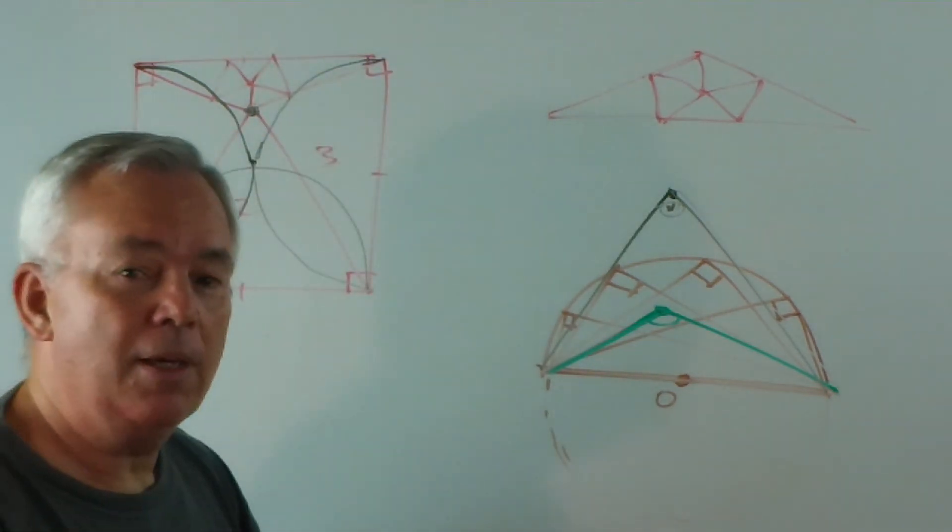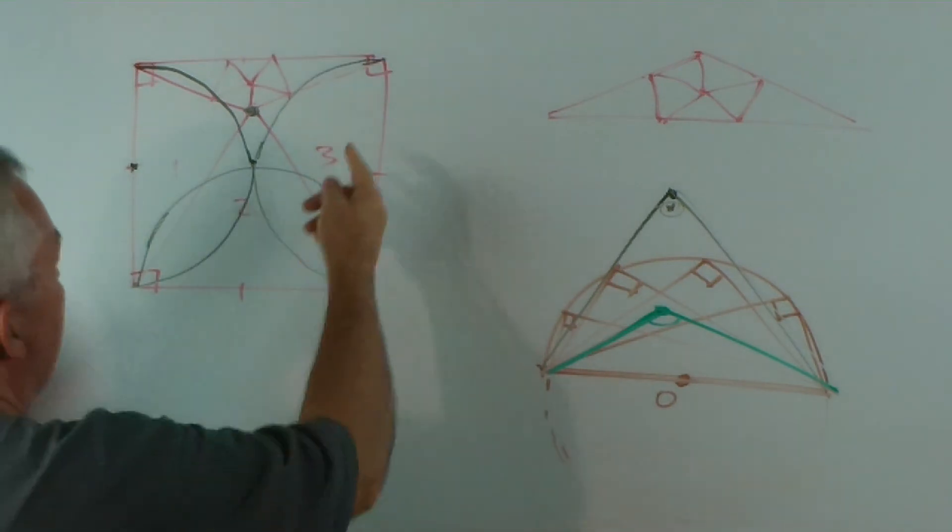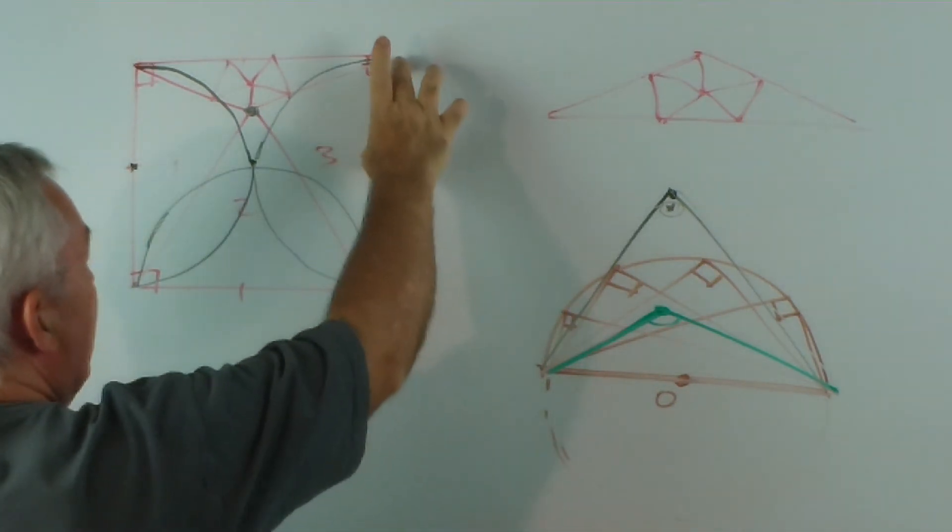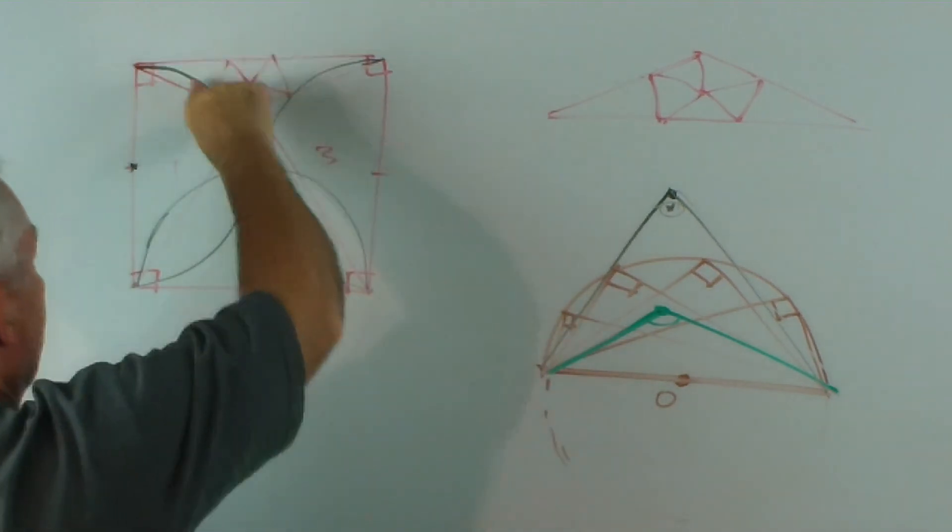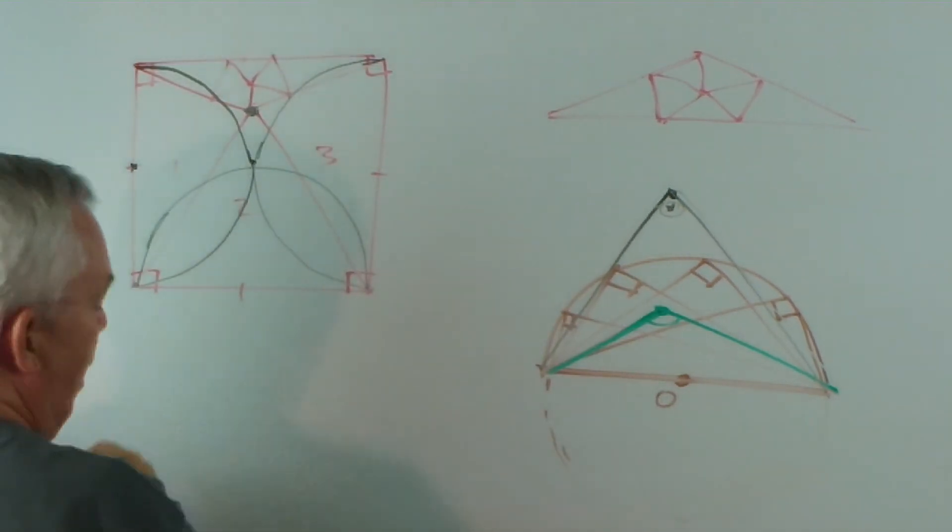So the construction to find the location of that point is to do just this: with a pair of compasses, to draw two semicircular arcs.